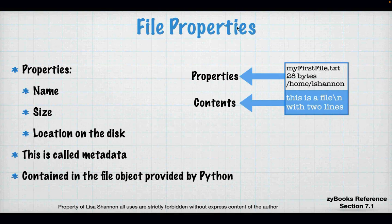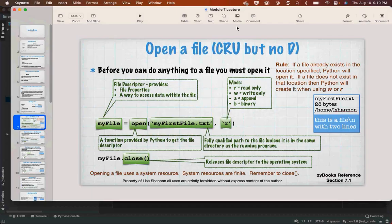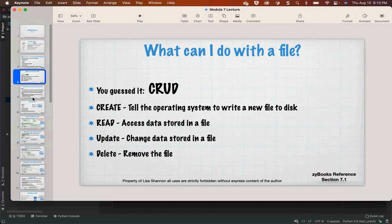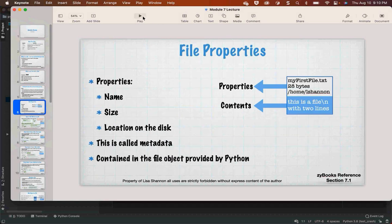There's a file object called a file descriptor. You get that file descriptor by giving it the name, the location, and what you want to do. Using that file descriptor, you can get to the data. When we think about files, we have to think about the data and the properties of the file — not just what's in it, but how big it is and where it is on disk.